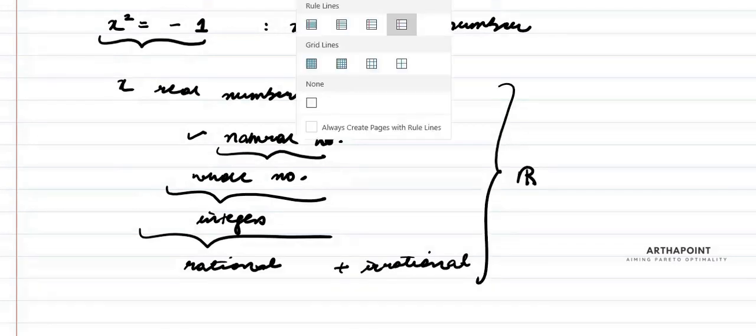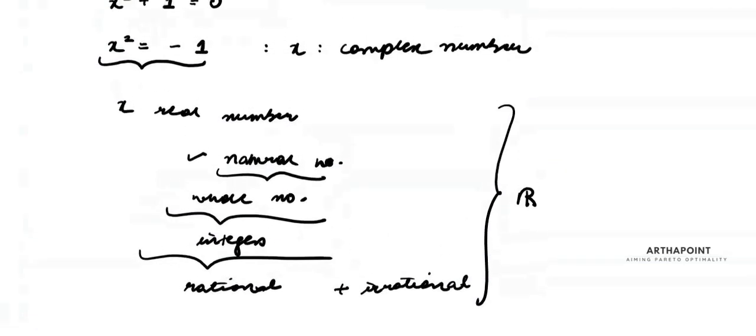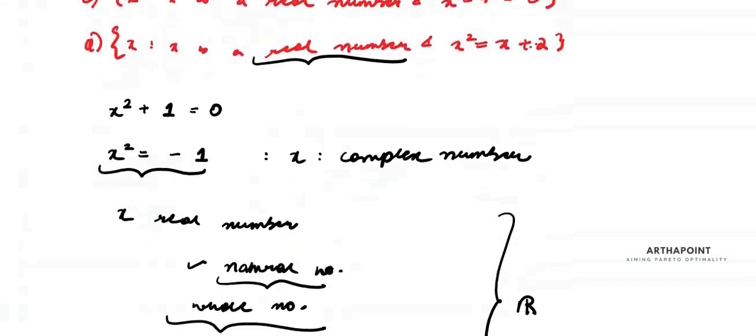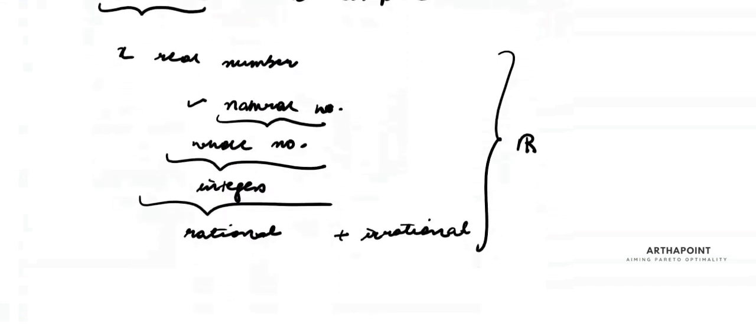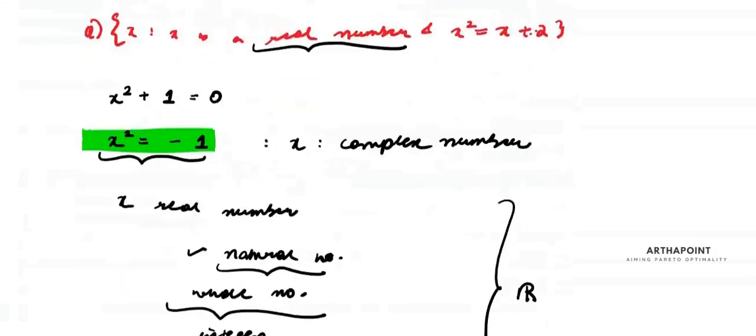This together is the set of your real numbers, but your real numbers do not consist of complex numbers. So because it does not consist of complex numbers, therefore we do not have any value of x that will be a real number and satisfy this equation. So the answer to this is B. Let's take the next question.